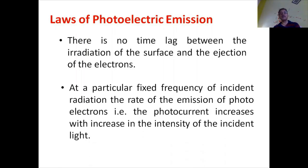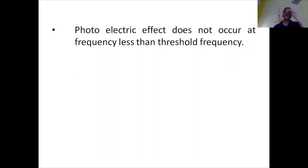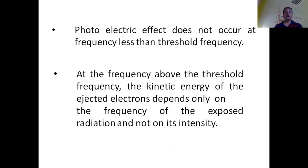The second law of photoelectric emission: at a particular frequency, the rate of emission of photoelectrons, that is the photocurrent, increases with increase in the intensity of the incident radiation. The third law: the photoelectric effect does not occur at a frequency less than the threshold frequency — every metal has a work function, that is a threshold frequency. The fourth law: at frequencies above the threshold frequency, the kinetic energy of the ejected electrons depends on the frequency of the radiation and not on its intensity. So to remember: photocurrent depends on intensity, and kinetic energy of electrons depends on frequency.